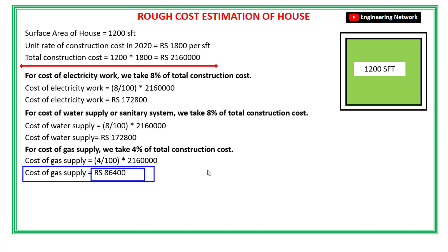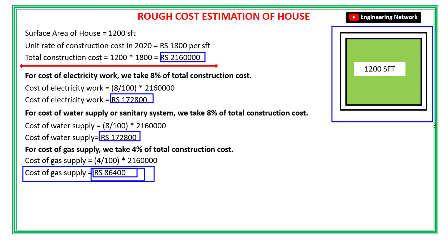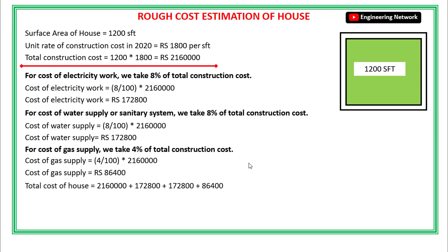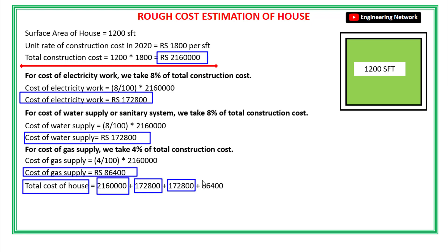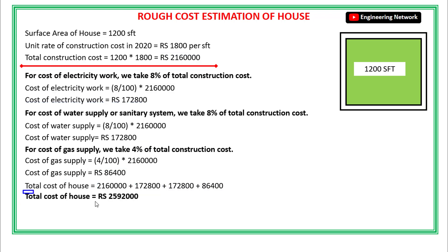Now I have the construction cost of the house, the cost of electricity work, the cost of water supply, and the cost of gas supply. If I add all these together, I will get the total cost of this house. The total cost is equal to the construction cost of 21,60,000 plus electricity work of 1,72,800 plus water supply of 1,72,800 plus gas supply of 86,400, and the total cost of this house will become 25,92,000 rupees.